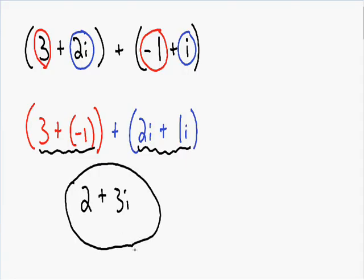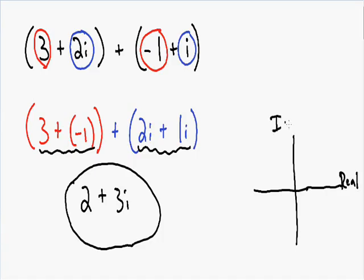Now I want to talk about graphing complex numbers. If you know how to plot points, I don't think graphing complex numbers is going to be too difficult for you. The horizontal axis is what we call the real axis, and the vertical axis is what we call the imaginary axis.